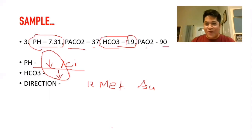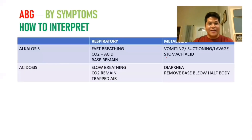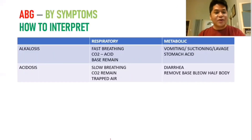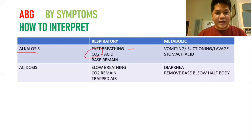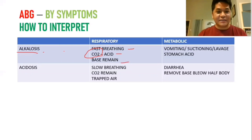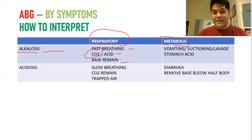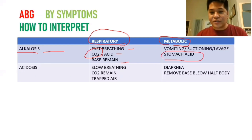Sometimes NCLEX asks about symptoms of ABG conditions. For respiratory alkalosis: if the client is fast breathing (hyperventilating), they eliminate carbon dioxide. Since carbon dioxide is acidic, eliminating it leaves the base — that is respiratory alkalosis. For metabolic alkalosis: when you vomit, suction, or perform lavage, you eliminate the acid from the stomach. What remains is the base — therefore, metabolic alkalosis.